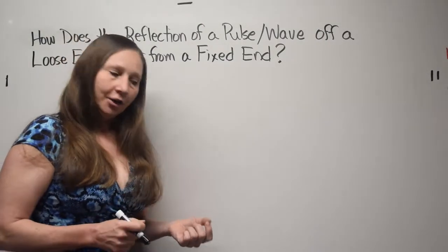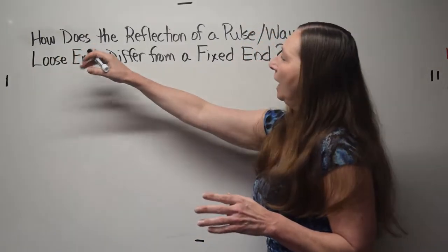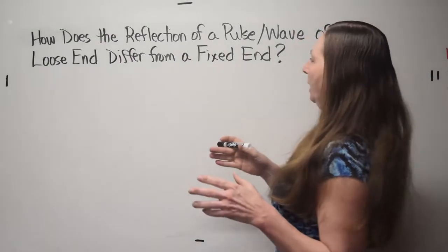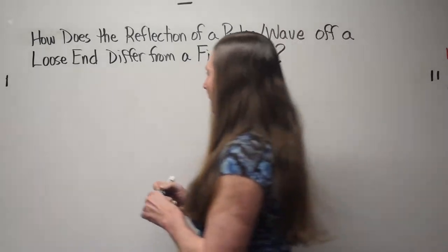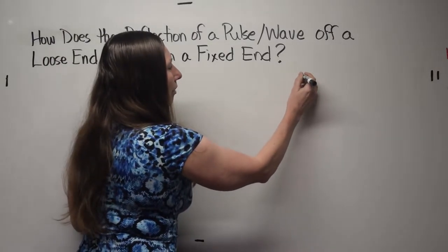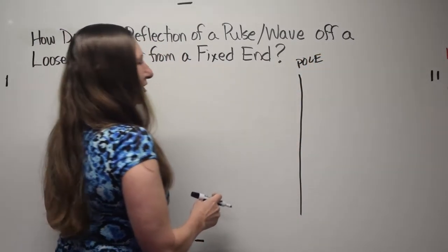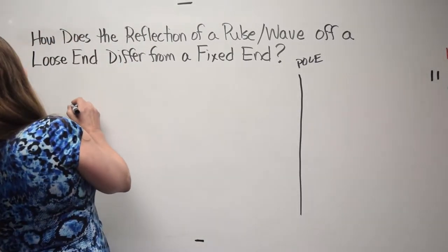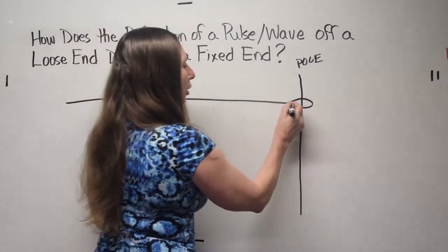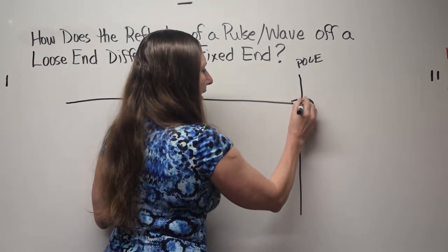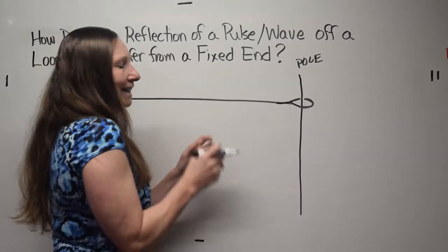The first thing we need to understand in order to understand a standing wave — what it is and how it's created — is the difference between how the reflection of a pulse or a wave off a loose end differs from the reflection off a fixed end. We're going to draw a pole, buried into the ground with concrete so it won't fall down. We take a piece of string and attach it loosely to the pole, making a loop around the pole, so the string can go up and down, sliding along the pole. It's not tied tight — the string can move.